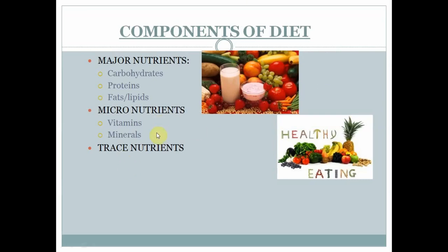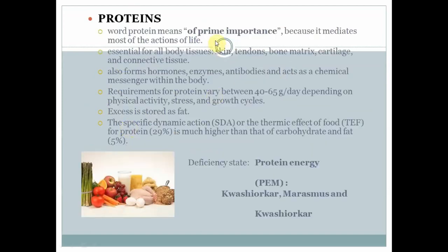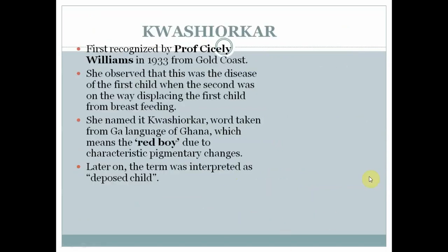The major nutrients are macronutrients, micronutrients and trace elements — carbohydrates, proteins, fats, vitamins, minerals and trace elements. Proteins are required for body tissue, skin and structural support. We need to stress on protein energy deficiency, that is PEM — kwashiorkor and marasmus.